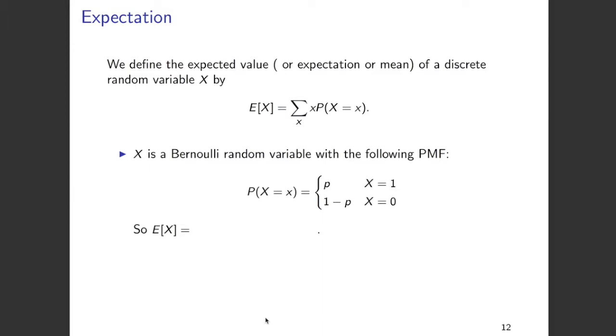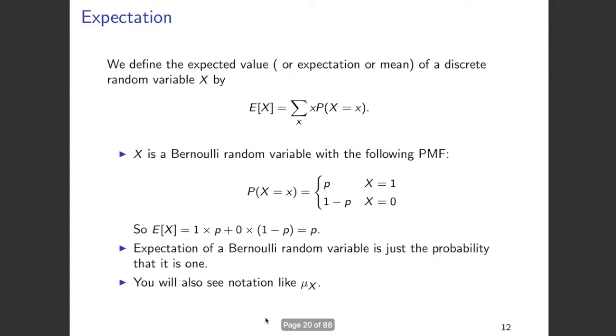So how do we calculate expectation of X for a Bernoulli random variable? We multiply 1 with p and 0 with 1 minus p, which gives us expectation of X as p. Therefore, expectation of a Bernoulli random variable is just the probability that it takes the value 1. Sometimes expectation is also denoted using a notation like mu subscript X.